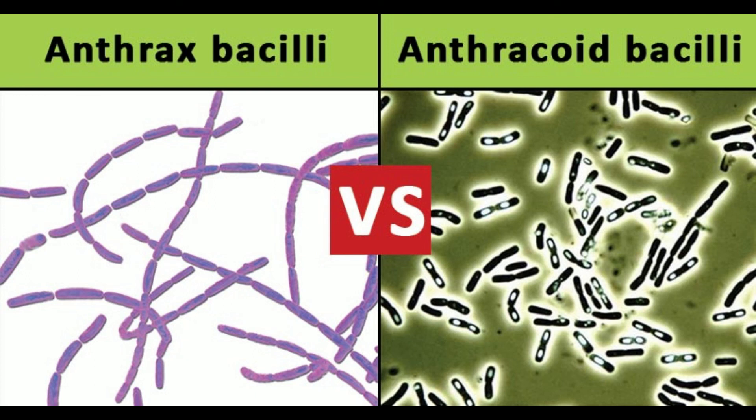Character 25: Organisms - anthrax bacilli: Bacillus anthracis; anthrachoid bacilli include B. cereus, B. subtilis, and B. licheniformis.